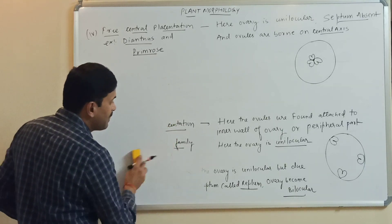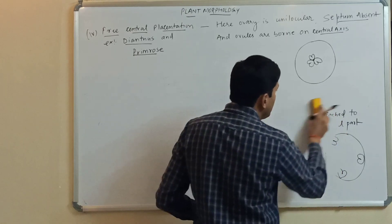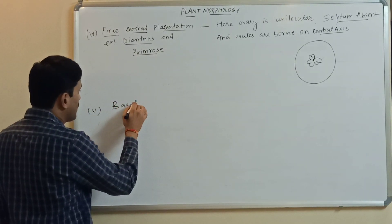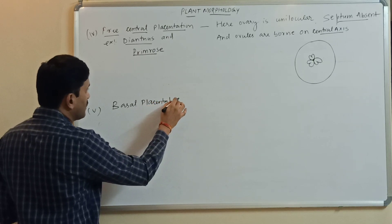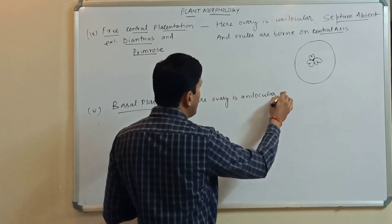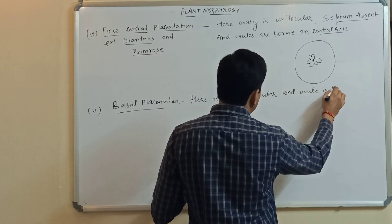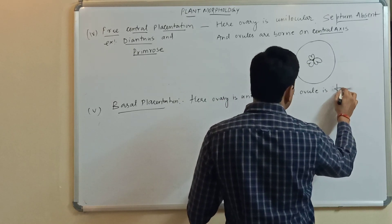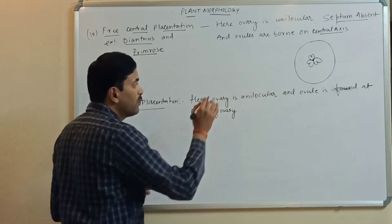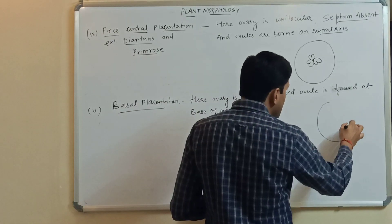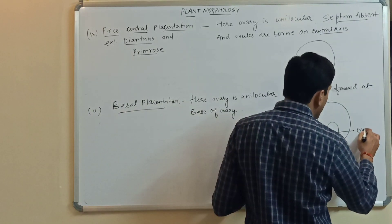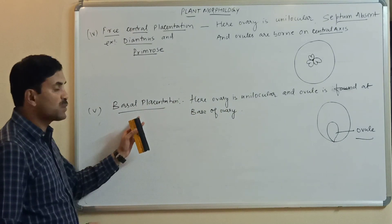The fifth type is basal placentation. Here, the ovary is unilocular and the ovule is found at the base of the ovary. The ovule is attached at the base of the ovary, which is why it is called basal placentation.